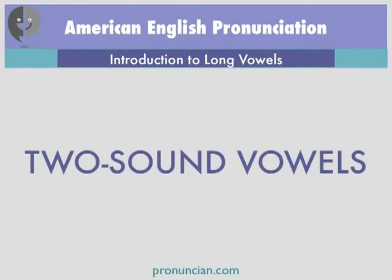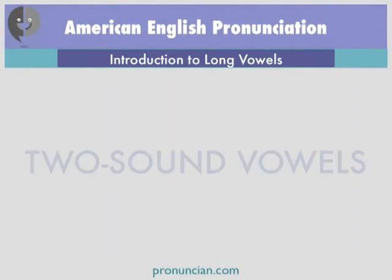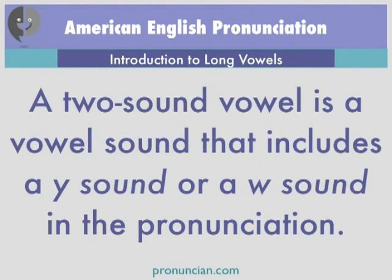Two-sound vowels. A two-sound vowel is a vowel sound that includes a Y sound or a W sound in the pronunciation. Often the Y sound or W sound is only a minor part of the sound, but it must be included for the sound to be pronounced fully.